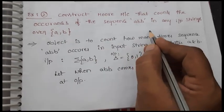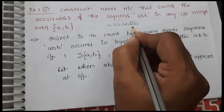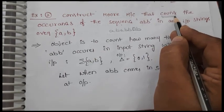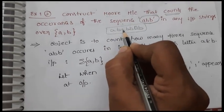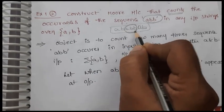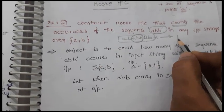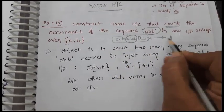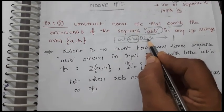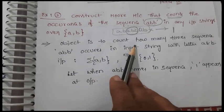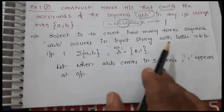If we have some input string like 'ababba b', our Moore machine should count how many times the sequence 'abb' occurs in the whole string. For example, here 'ab' is not a match, but 'abb' occurs once. So our Moore machine should report that 'abb' was encountered one time in the input string.